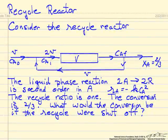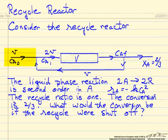In this example, we'll look at calculations for a recycle reactor. So we have a plug flow reactor volume V, and into the system we have a feed of reactant A, concentration Ca0, and a volumetric flow rate V.